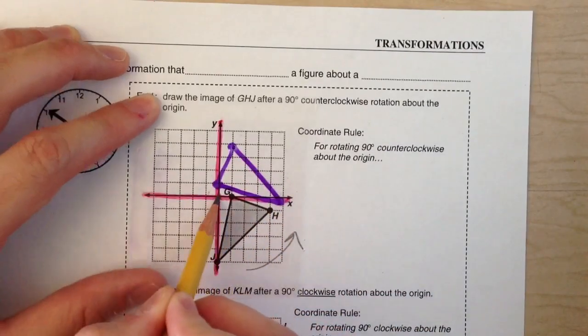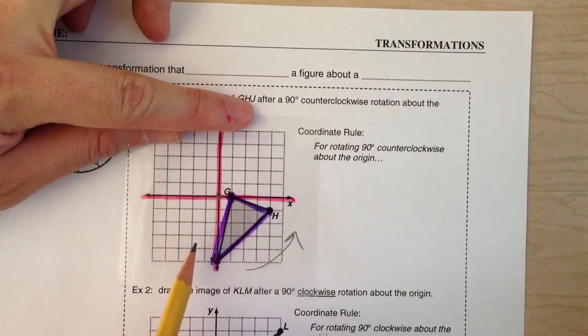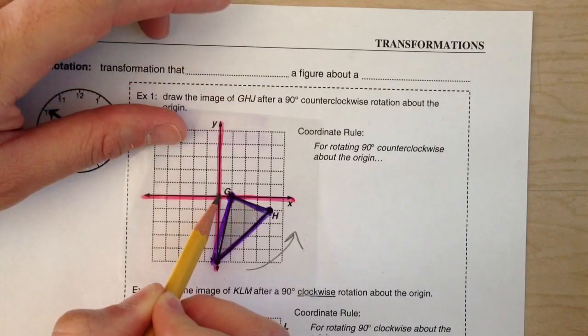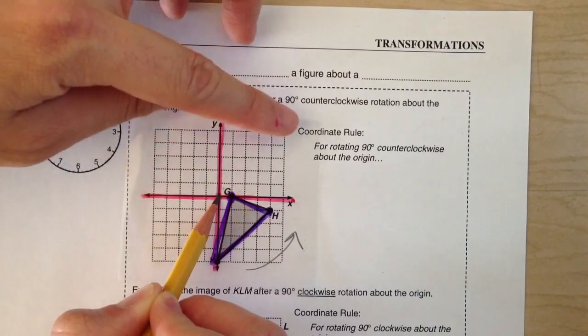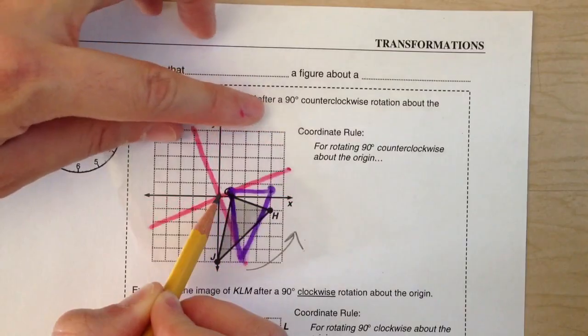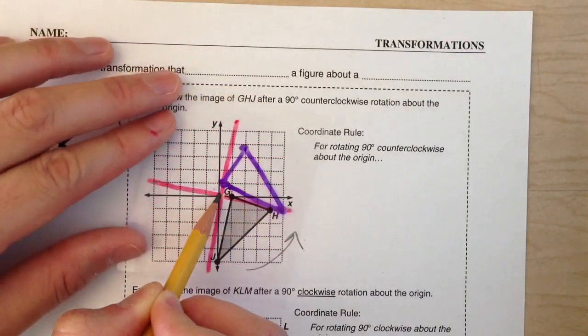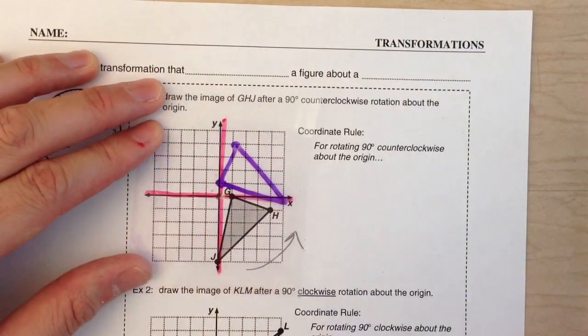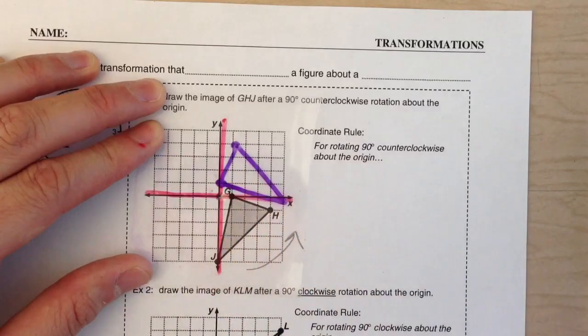I'll do it one more time for you. So here's the original. Put my pencil on the origin, because that's where we're rotating it around. And counterclockwise until the axes line up again. Bam! There it is, right there. And there's our new shape.